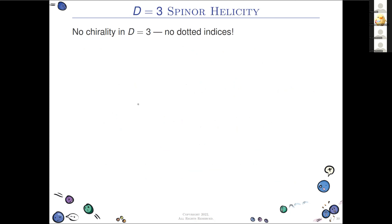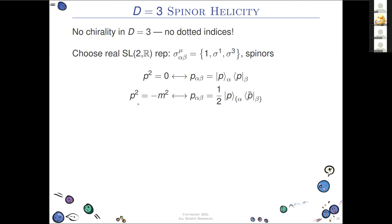We're going to use spinor-helicity formalism in three dimensions. First thing to note: there is no chirality in 2+1 dimensions, so there are no dotted indices, only undotted indices. We choose the SL(2,R) representation, which means our momenta when contracted with these objects will be real, but the individual spinors need not be real.